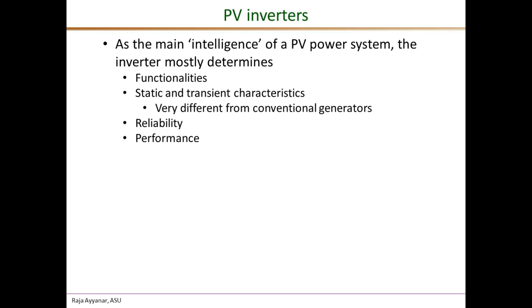The steady state and transient characteristics of the PV power system depend on how the controllers inside the inverter have been designed, and these characteristics can be very different from those of conventional power plant generators — both in positive ways and in negative ways, for example in terms of the fault current characteristics and the response during system contingencies.